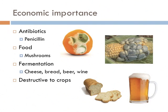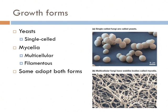Fungi grow in two different ways: unicellular or multicellular. Unicellular fungi are called yeasts. The vegetative form of a multicellular fungus is known as a mycelium, and they form an extensive network of filamentous hairs that form a branching network that reaches out to absorb nutrients from their food.